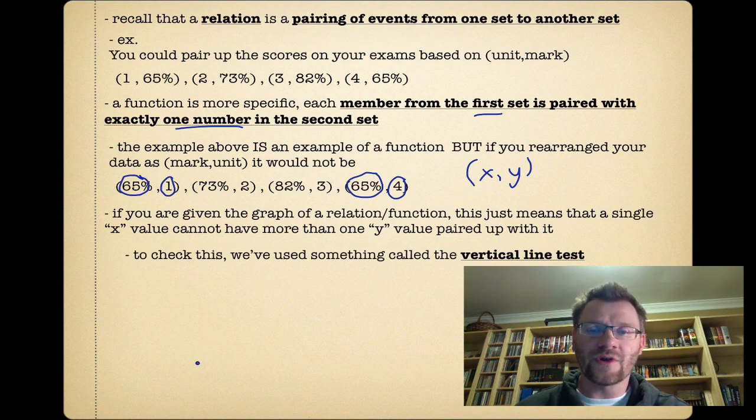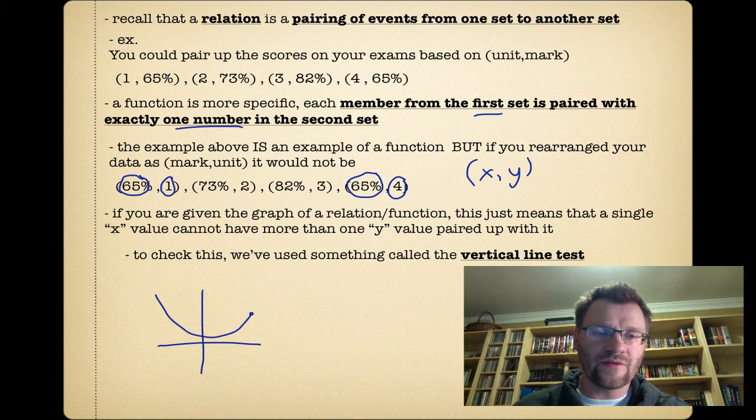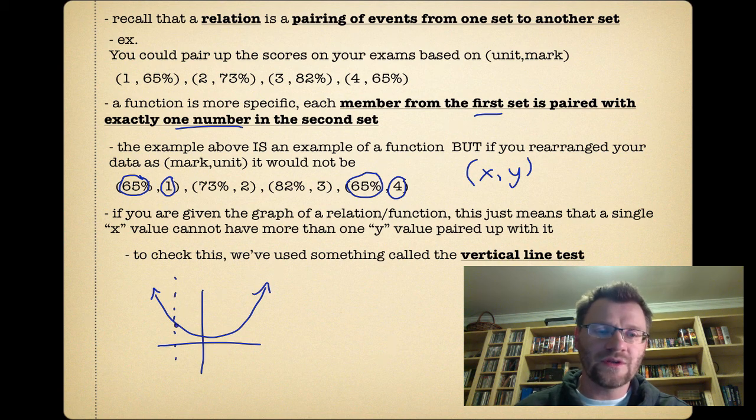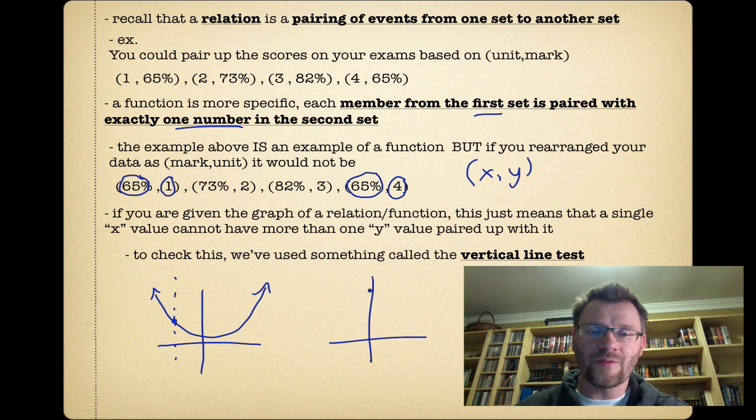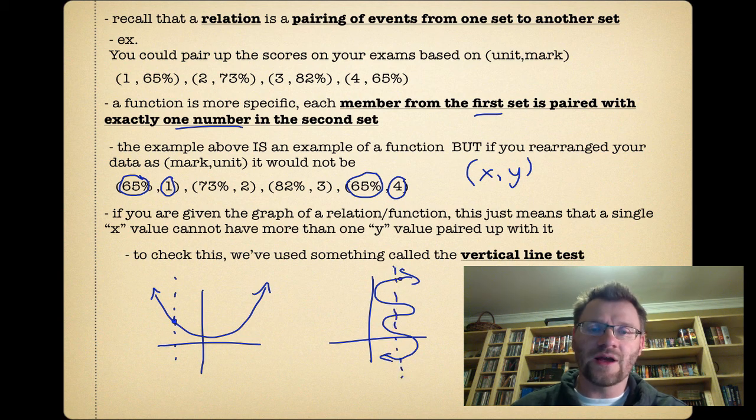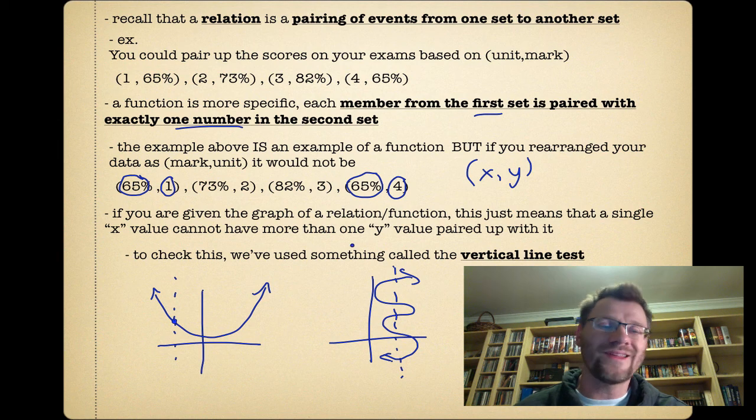If you're given the graph of a relation or function, this just means that a single x value cannot have more than one y value paired up with it. We call this the vertical line test. If we had a simple parabola, anywhere we draw a vertical line only crosses once - it is a function. Whereas something like this fails vertical line test. If we draw a vertical line it crosses more than once. That means one x value has more than one y value, and that is not a function.